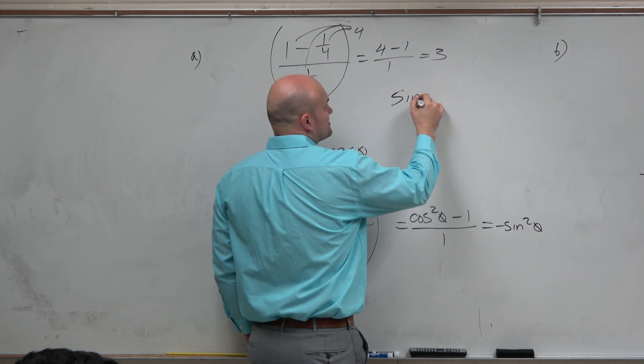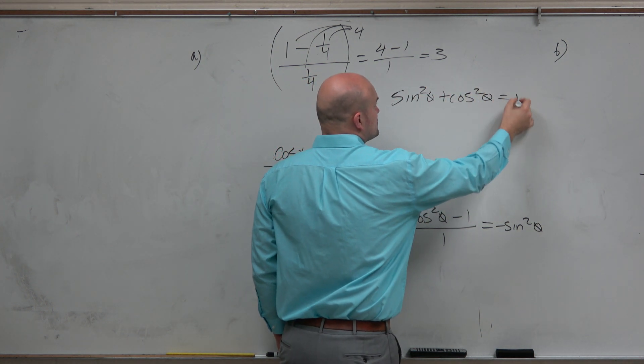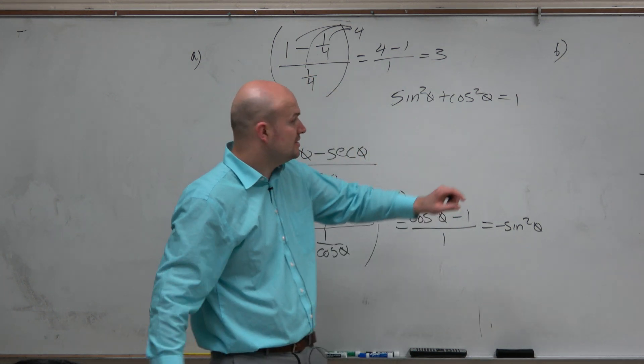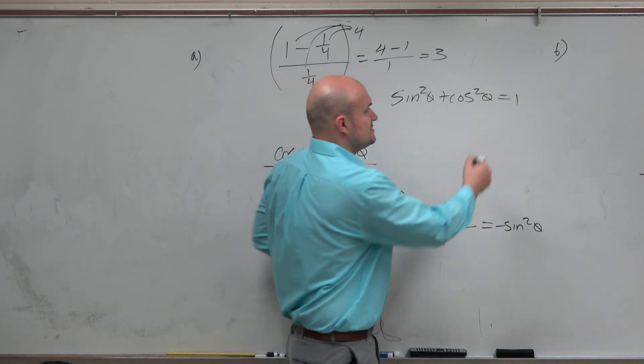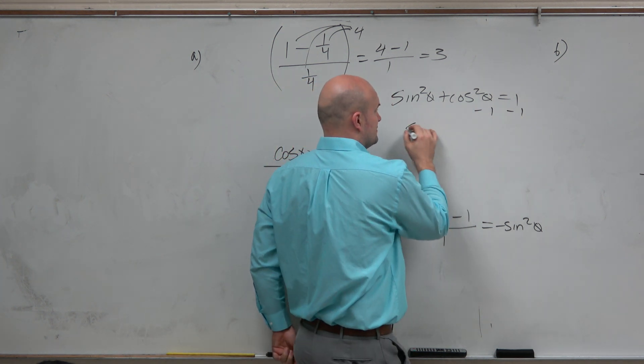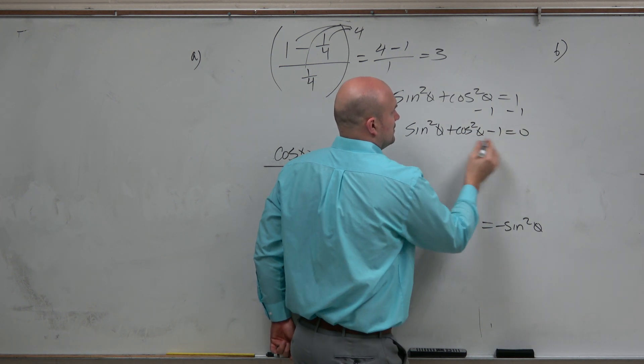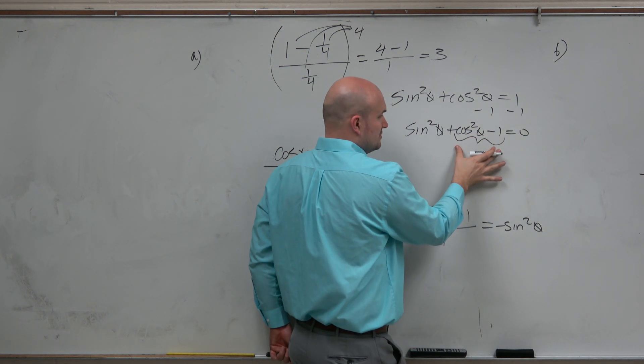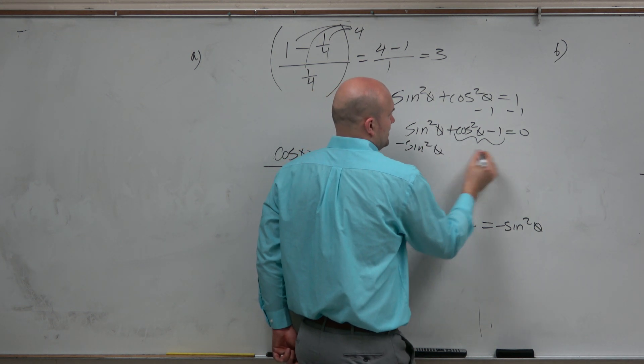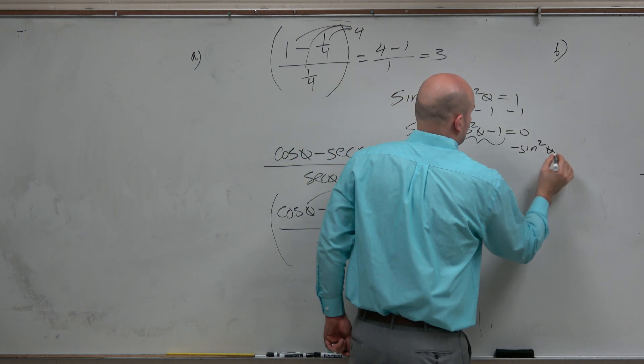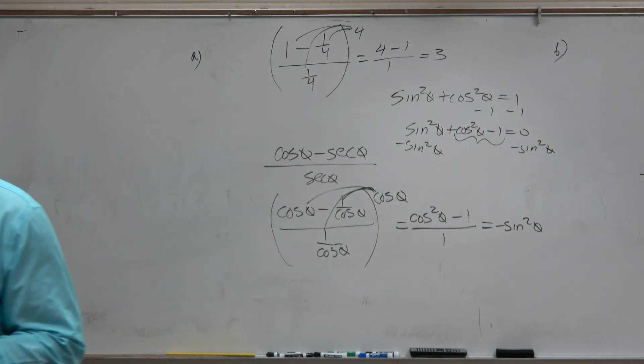Remember guys, sine squared of theta plus cosine squared of theta equals 1. Again, you'll have this provided to you. But watch, if I'm going to get cosine squared minus 1, I would have to subtract the 1. Right? This is what I want to solve for. So that means I've got to get rid of sine. So I'd have to subtract. That's why it's a negative sine squared.